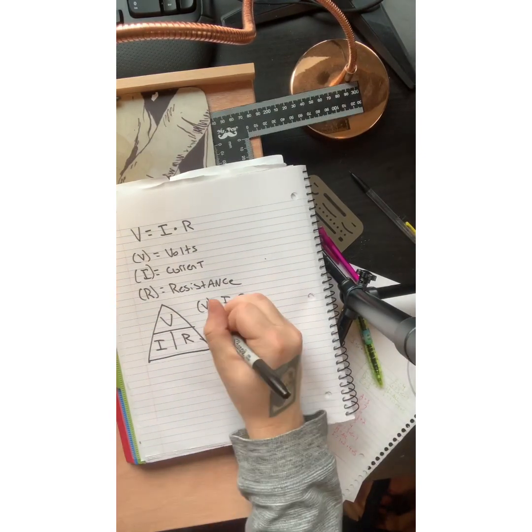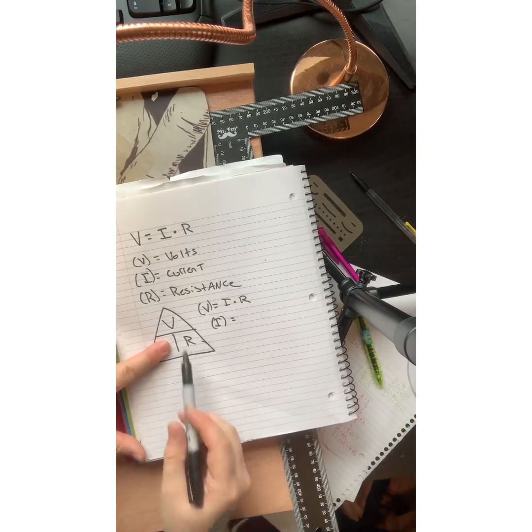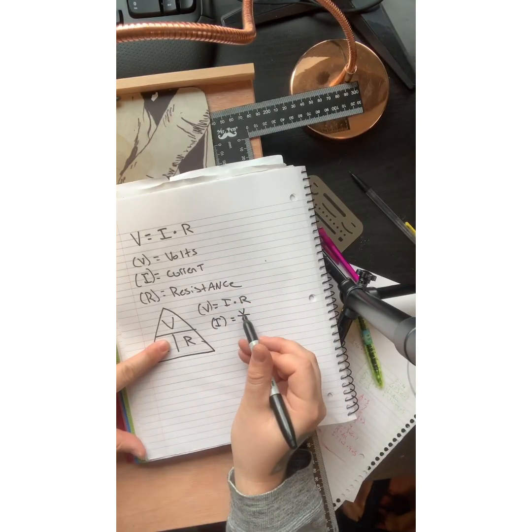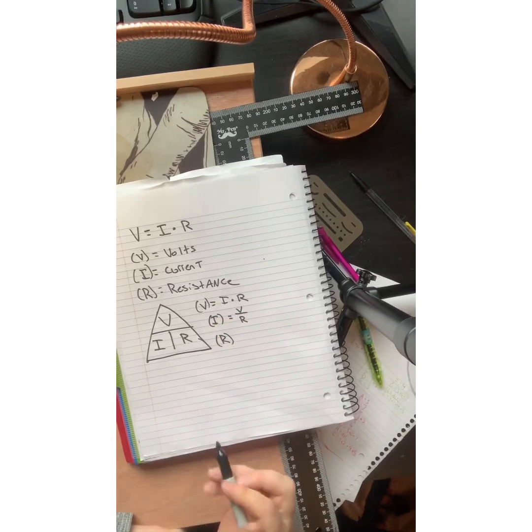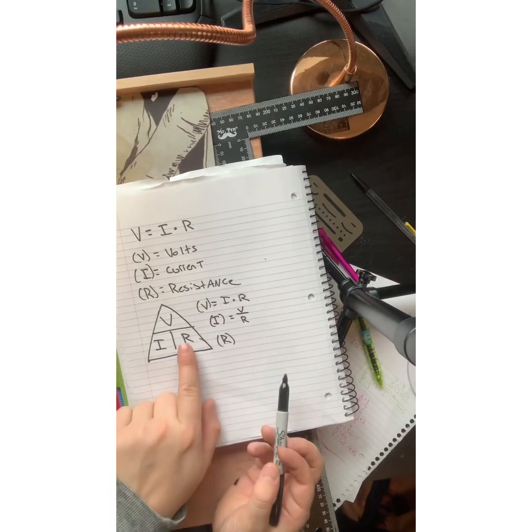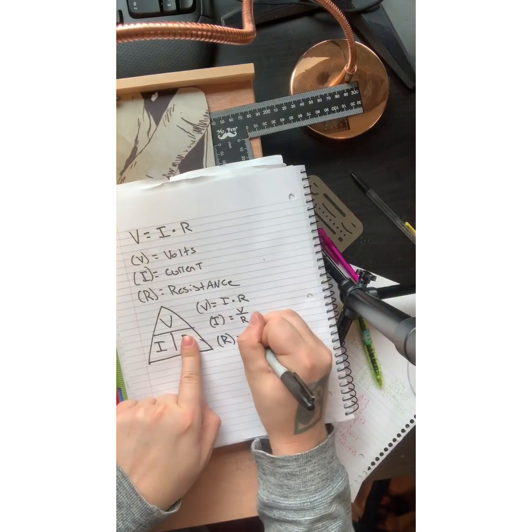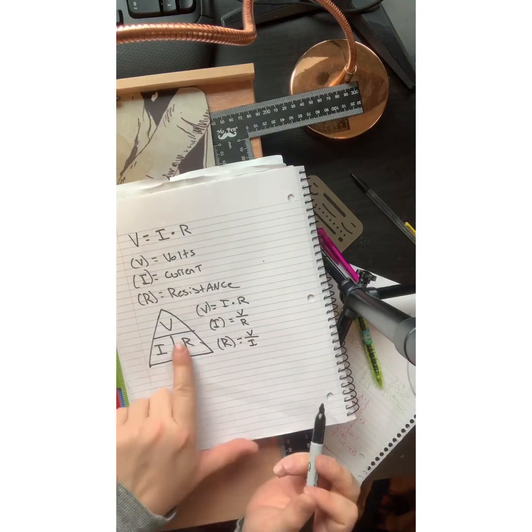Another way to explain this, say you're looking for your current here, you can just cover that and you know that your current equals your voltage divided by your resistance. And lastly, say you're looking for your resistance here, you can cover the R and then you know that your voltage needs to be divided by current to get your resistance.